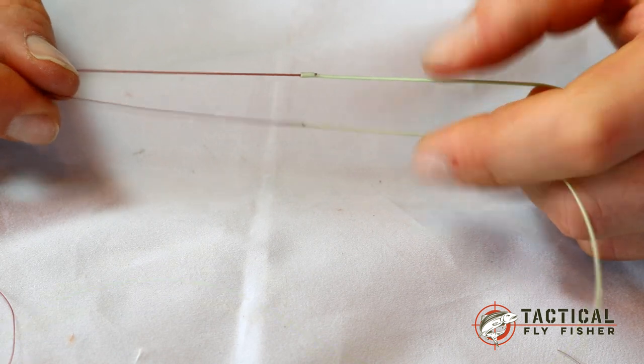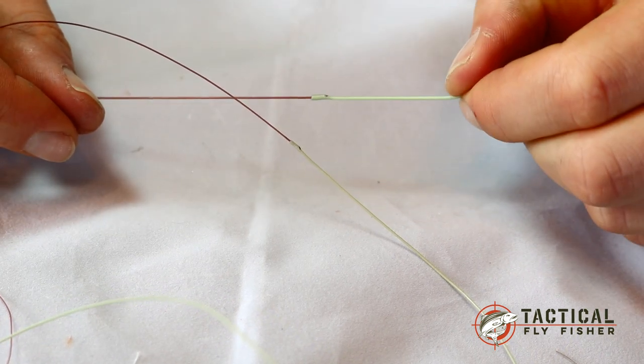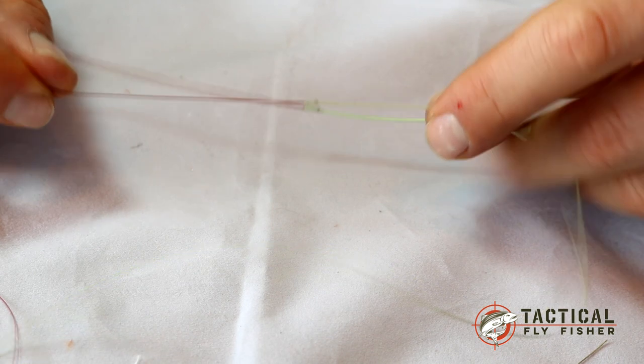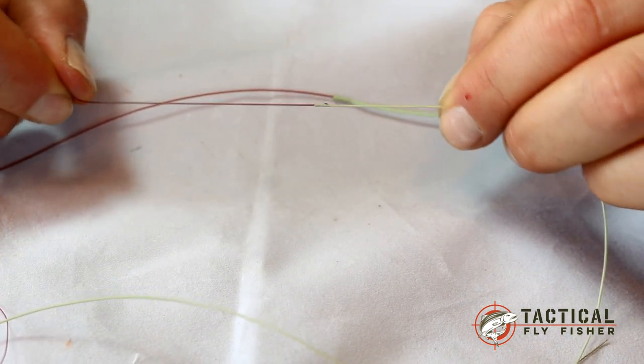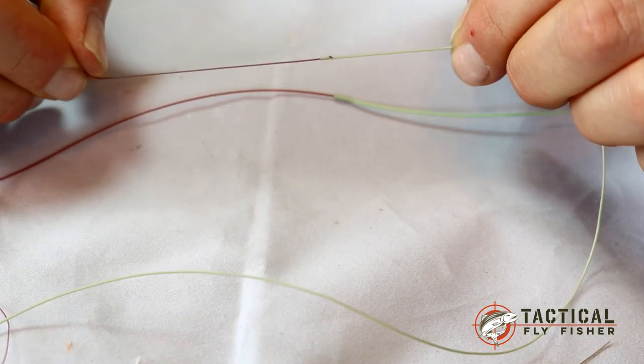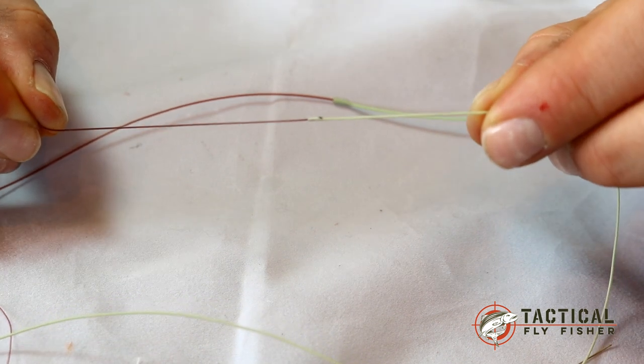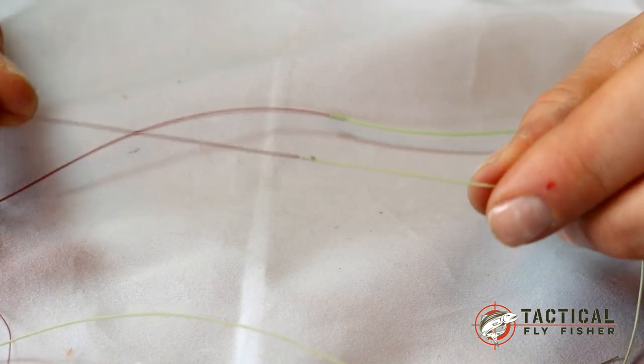You can do this with a typical traditional fly line like this that's a five weight or you can do it with a Euro-nymphing micro thin fly line like this, but it just makes it a little bit harder to get the needle in. It is doable though.